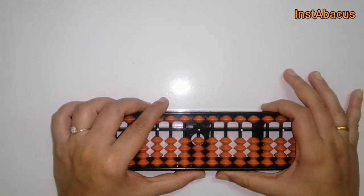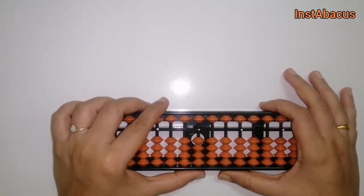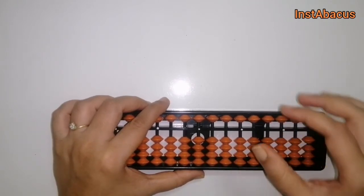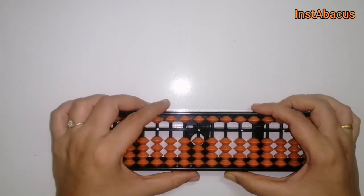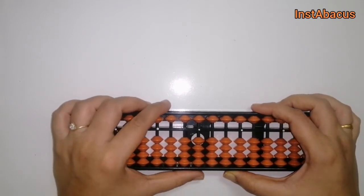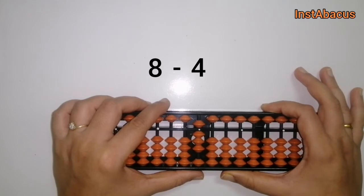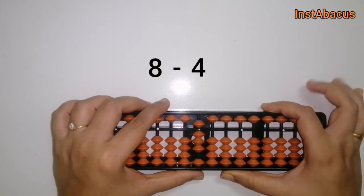Alright, the first one is 8 minus 4. So this is 8 on our abacus and we are going to subtract 4 from it.